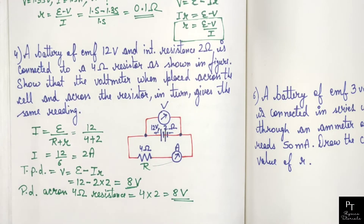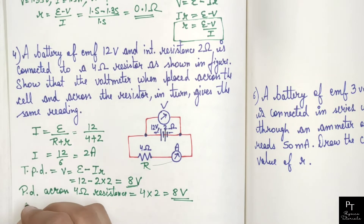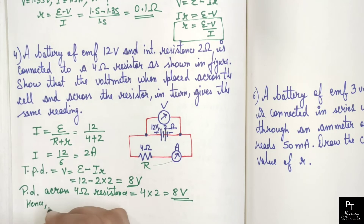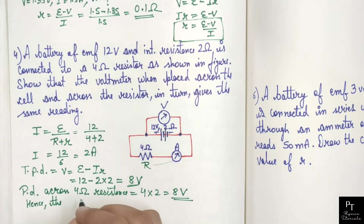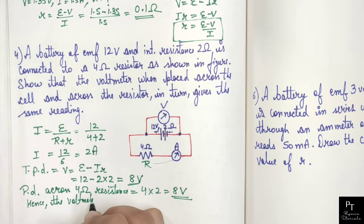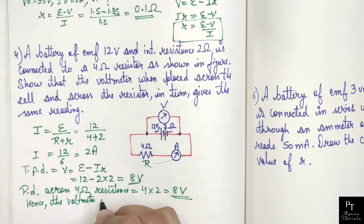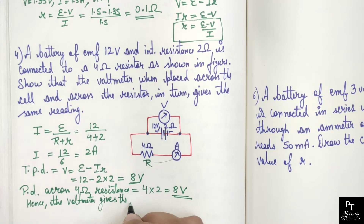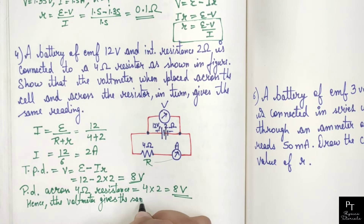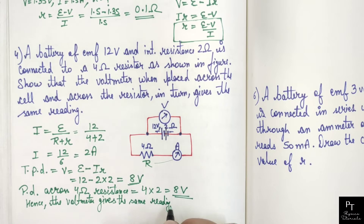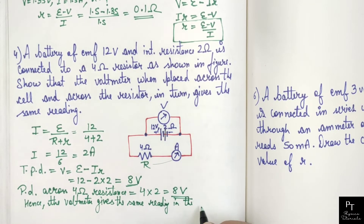The voltage across the 4 ohm resistor is also equal to 8 volts. Hence the voltmeter gives the same reading in the two cases.